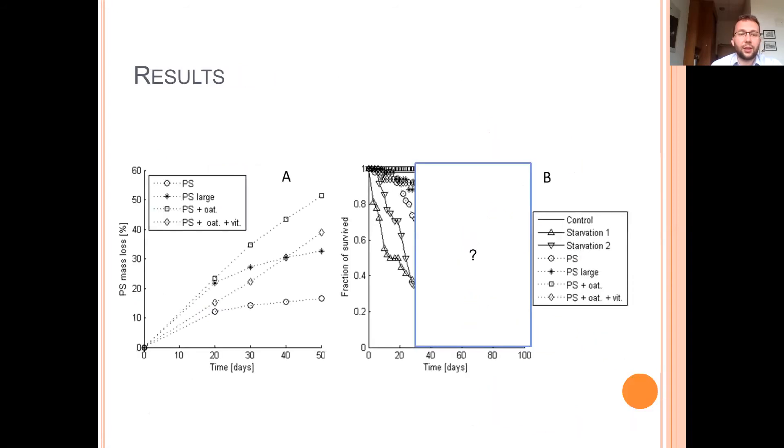And here are some results. As you see, the PS waste mass decreased during the experiment. And so larvae basically ate polystyrene chips.